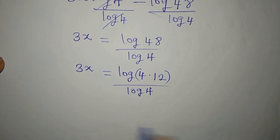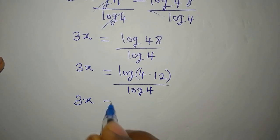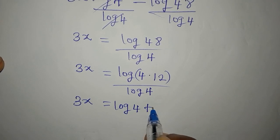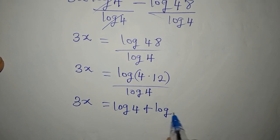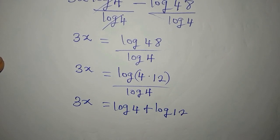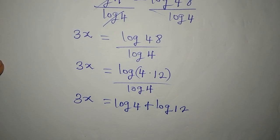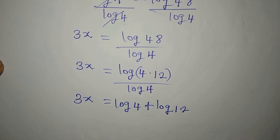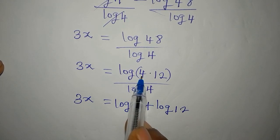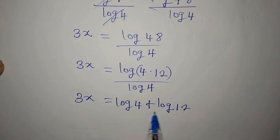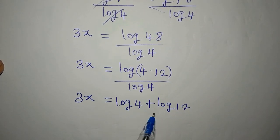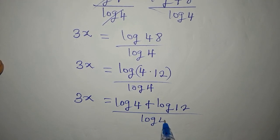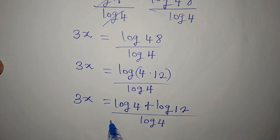So we have 3x equal to log(4 × 12) over log 4. According to the product law of logarithms, if you are multiplying 4 times 12 inside the log, it can be broken into log 4 plus log 12, giving us log 4 plus log 12 all over log 4.